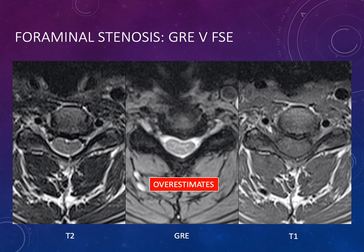Moving from the canal to the foramen: gradient echo imaging provides nice thin-section images of the cervical spine, but these sequences are prone to artifact. They tend to expand bone — a so-called blooming artifact — causing apparent narrowing of the foramen. Foraminal narrowing is therefore often overestimated on gradient echo images. Comparing the T1, gradient echo, and T2 images side by side, you can see the gradient echo shows much more narrowing of the left foramen than the other sequences. So be careful when calling foraminal narrowing on gradient echo images.